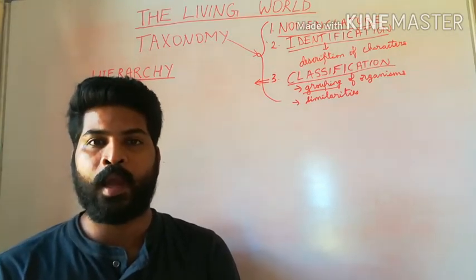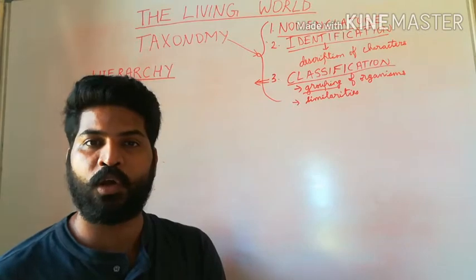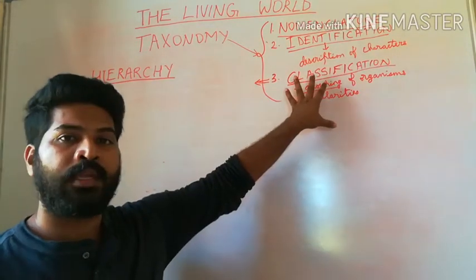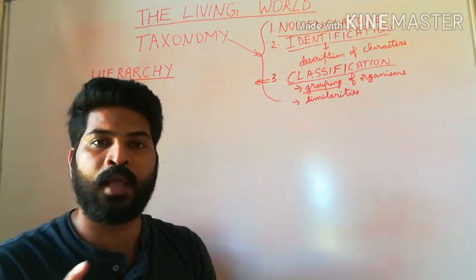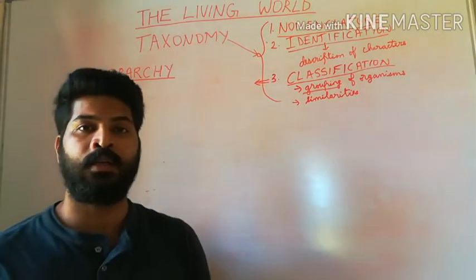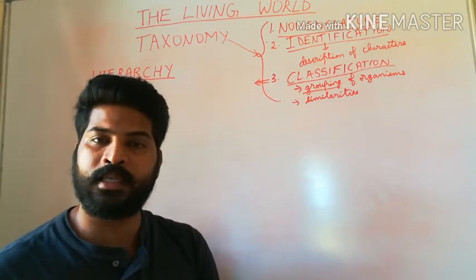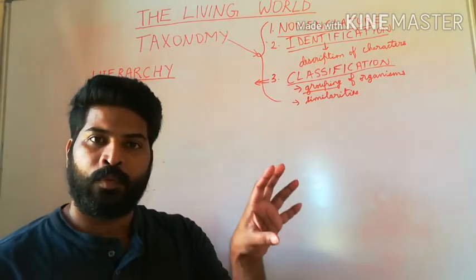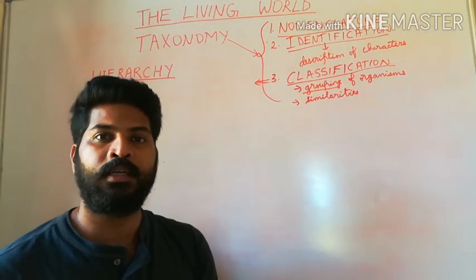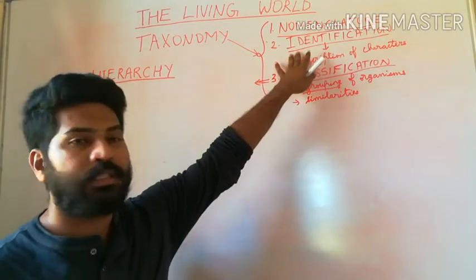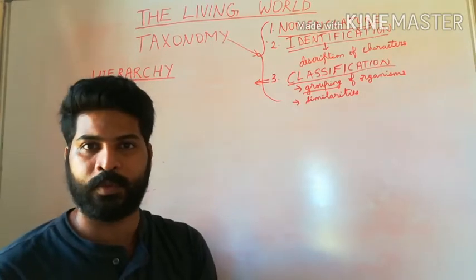Welcome. In the previous session we discussed taxonomy, which deals with the identification, nomenclature, and classification of organisms. Classification is not a single step process — there are many steps or categories. Suppose a group of scientists come across a new organism they have not seen previously. By looking at the organism, they have to classify it. First and foremost, they should correctly describe the features, including whether it is a microorganism visible only through a microscope.